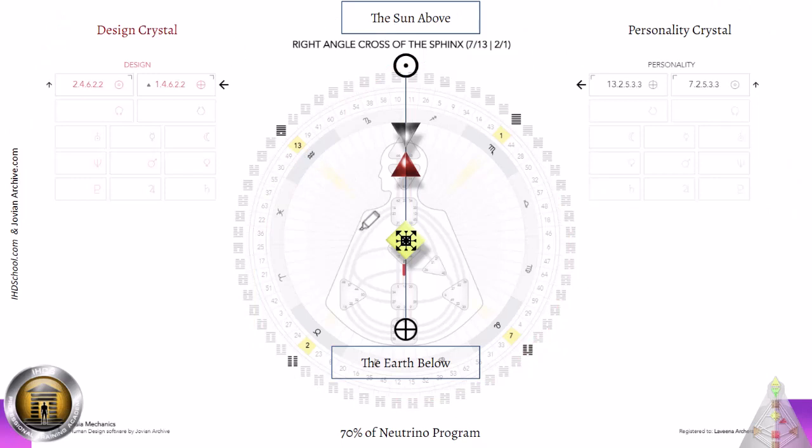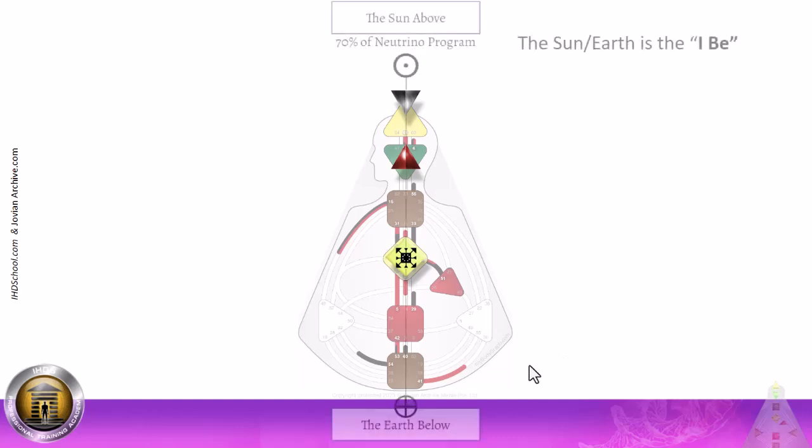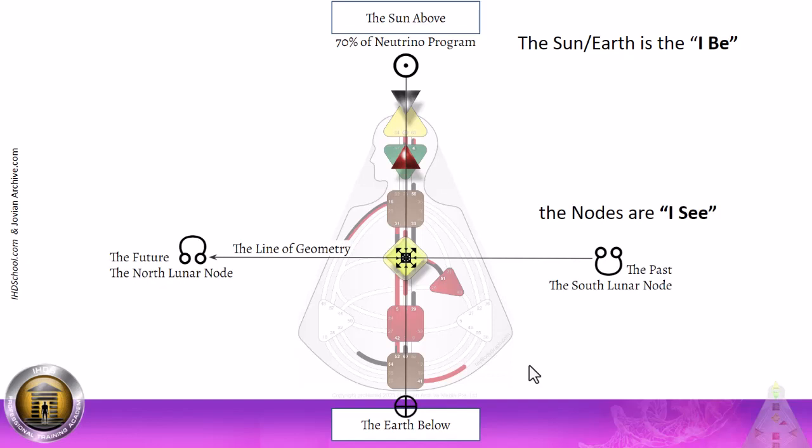That is the programming of your life's work. And then we get to the nodes where we see the programming of seeing. What do we see as we walk along this path in our reality? The nodes are what I see, the external variable that shows us our line of geometry.